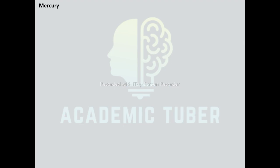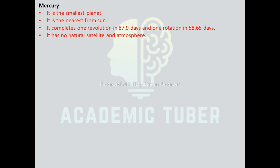Mercury: it is the smallest and closest planet to the Sun. It accomplishes one revolution in 87.9 days and one rotation in 58.65 days. It has no natural satellite and no atmosphere.